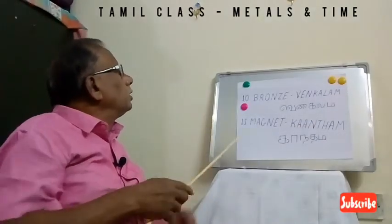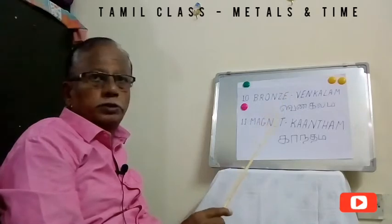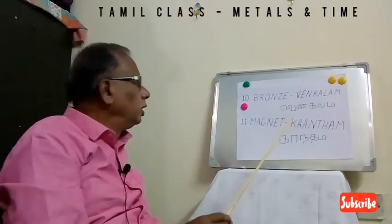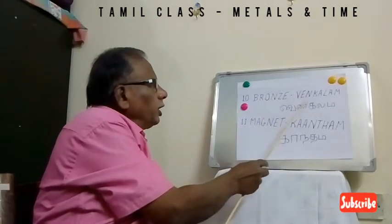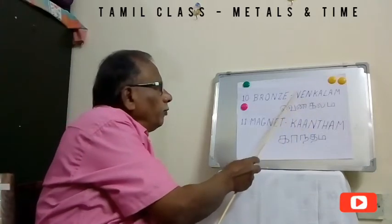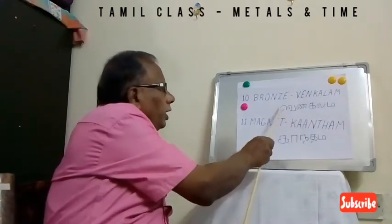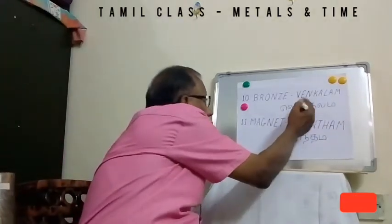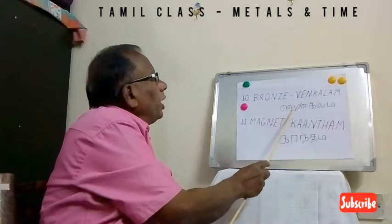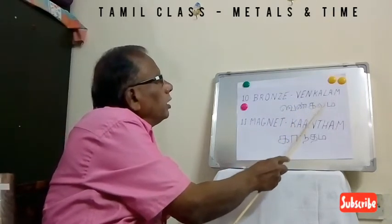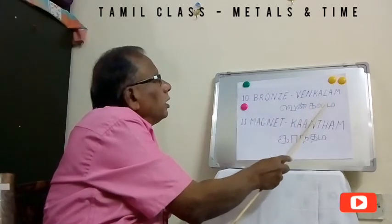The tenth metal is Bronze. It is said to be a very heavy metal — they call it German metal. Nobody is using bronze much nowadays, but it is very good for cooking. In villages they still use it. In Tamil it is called Venkalam — V-E-N-K-A-L-A-M. Ven, Ka, La, Im — Venkalam.